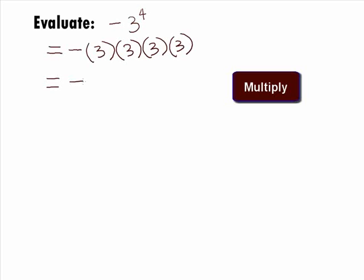When we multiply that out, we get our final answer of negative 81. Again, when it's written as negative 3 raised to the 4th power without the parenthesis, it is thought of as finding the negative or opposite of 3 to the 4th power.